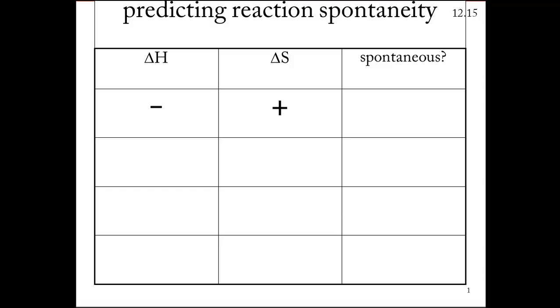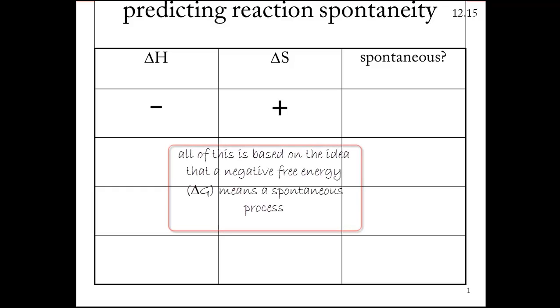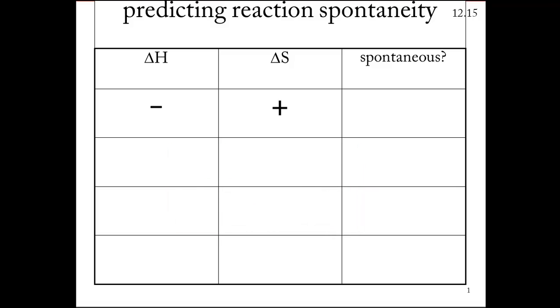If this is positive, notice delta G equals delta H minus T delta S. Therefore, a positive delta S tends to make overall a more negative number because it's subtracting. That's got to always be spontaneous.